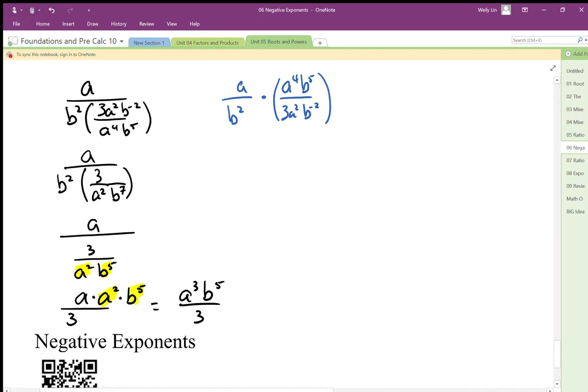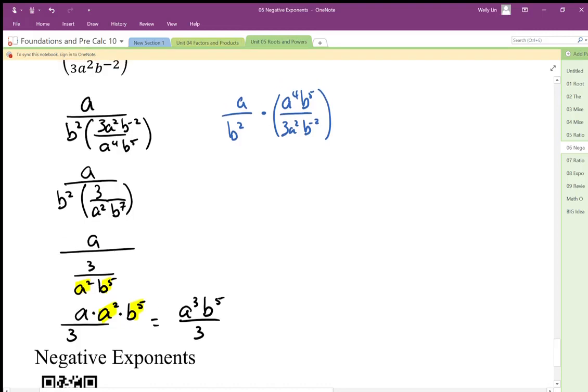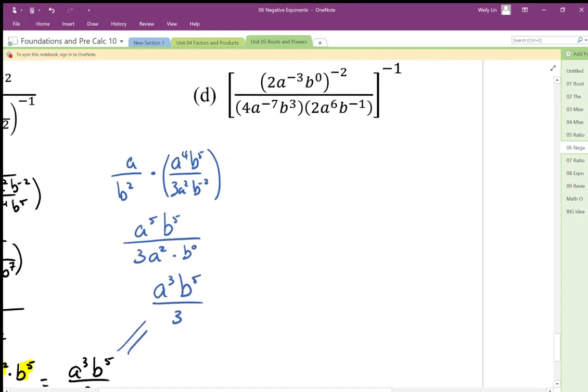Instead of flipping the fraction, I used the divide and put it into times on top. So I'm just going to work out the top a⁵b⁵ on the bottom 3a²b². And then times b⁻². Well, that's times in the denominator. That's divide in the denominator, times and divide cancel out. So that's b to the power zero. So that's just one. We can simplify power five power two. We end up with a³, b⁵ ends up being just in the denominator. So these are the same answer.